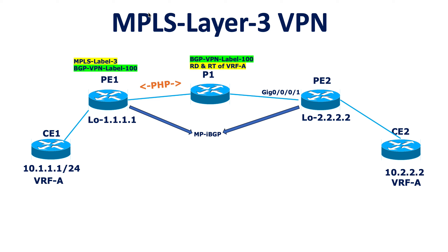The CE1 to CE2 VRF A ping will not work — that is the right answer from the comments. If you configure the MP-IBGP session using interface IPs, the Layer 3 MPLS VPN between CE1 and CE2 will not work. Thank you.